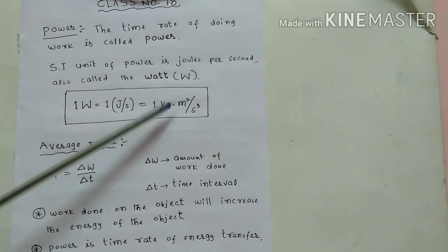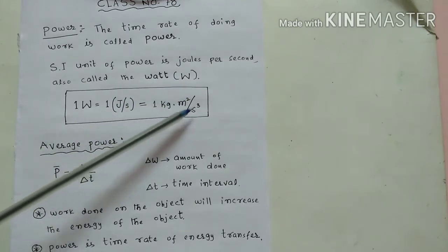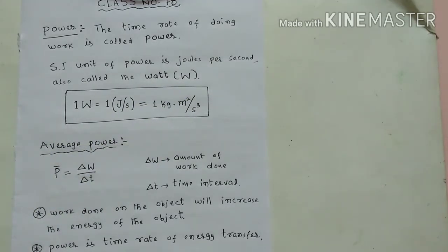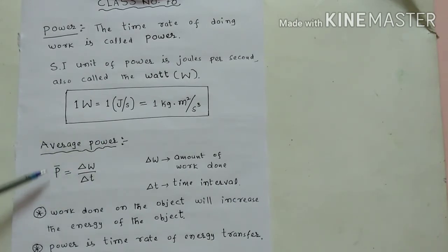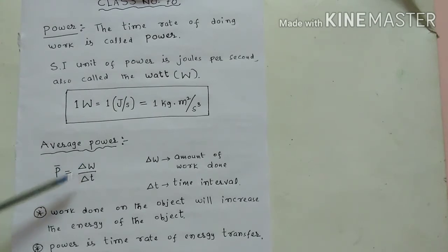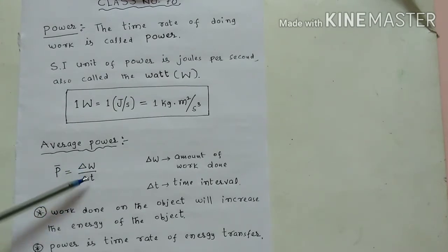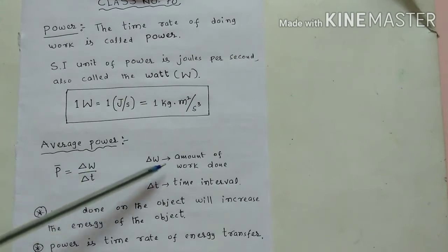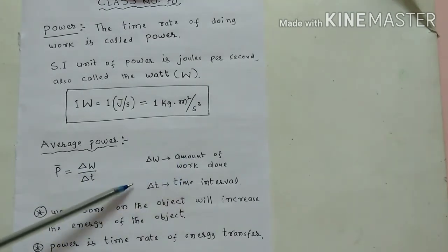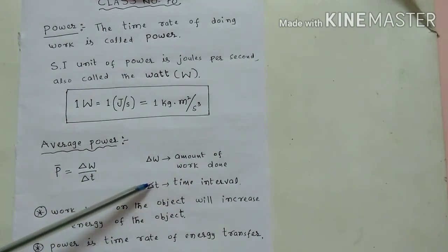Now we will do average power. Average power is equal to del W divided by del T. This del W is amount of work done in a time interval of del T.